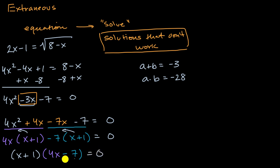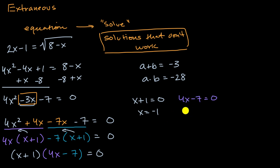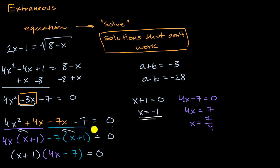Now we can see the solutions. Either x plus one equals zero, which happens when x equals negative one, or 4x minus seven equals zero, which happens when 4x equals seven, meaning x equals seven fourths. So we got these two solutions, and I promised you that one of them would be extraneous.